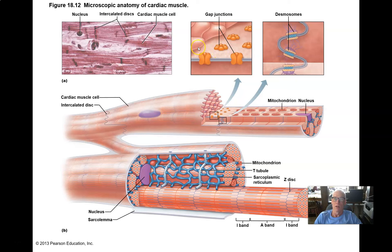In those intercalated disks are also gap junctions, so that if one cell happens to depolarize or have an action potential, ions that have entered that cell can cross over into the neighboring cell and depolarize that cell. So depolarization waves spread from cell to cell throughout the heart.